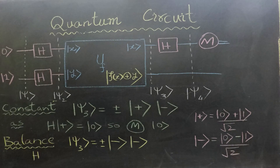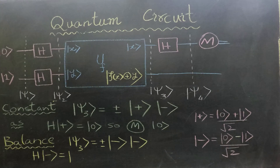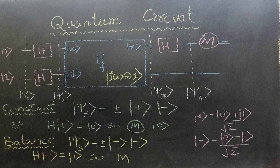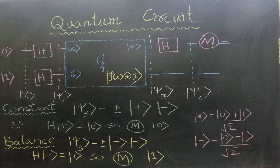In |ψ4⟩, applying the Hadamard gate to the first qubit transforms it into |1⟩. Therefore, when the function is balanced we measure 1 with 100% probability. That's it — it is a straightforward concept, but I strongly advise you to grab a pen and paper and work through the mathematics yourself. Becoming an expert in this field requires hands-on practice. That concludes this video.